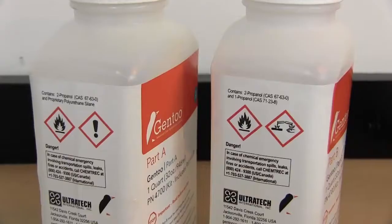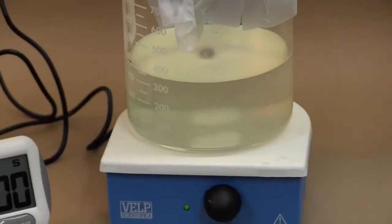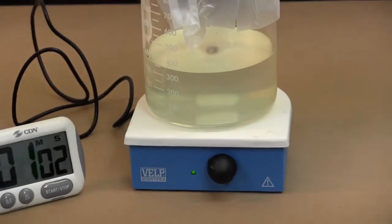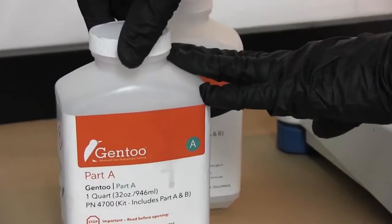Mixing. Both Part A and Part B of Gentoo are flammable. Use mixing equipment rated for flammable liquids. The first step in preparing Gentoo is properly mixing the product. Mix Part A thoroughly.